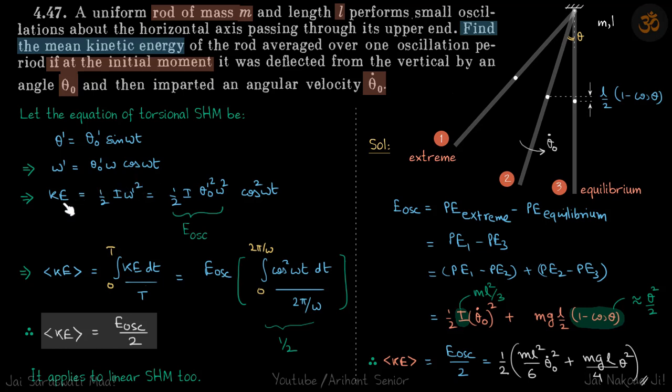So we put that value of ω' here and this is the kinetic energy of the body at a time t. This is the maximum kinetic energy, so that means this is the energy of oscillation.